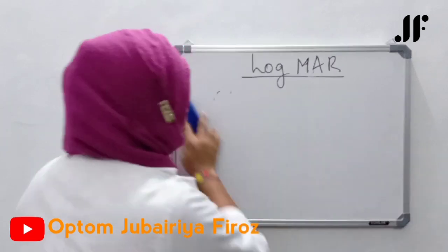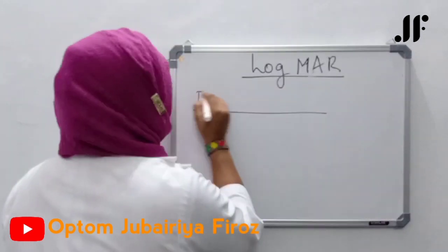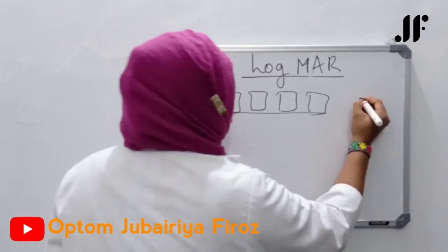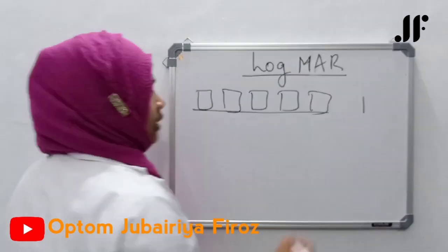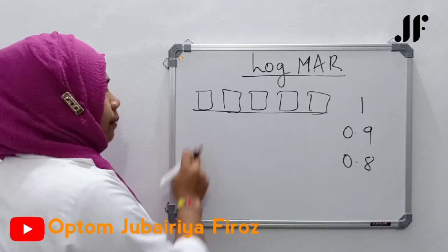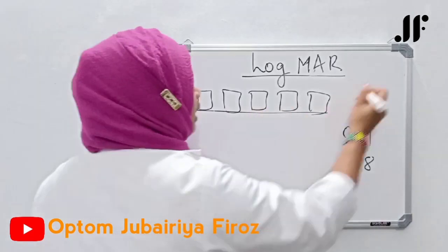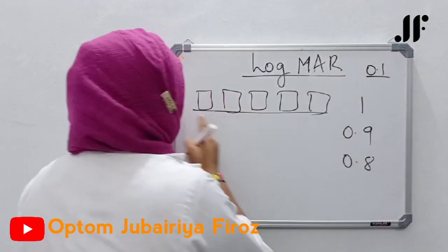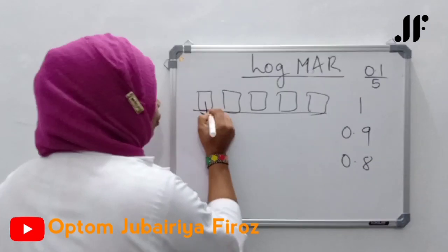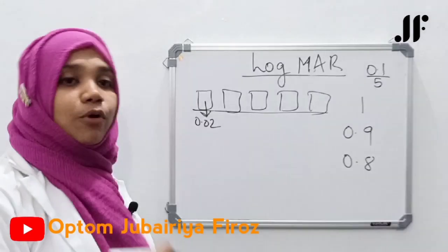Now coming to recording. Recording one line is 5 letters. Each line is - topmost line value 1, second line 0.9, third line 0.8. That means value of 1 line is 0.1. Value of 1 line is 0.1. One line has 5 letters, 0.1 divided by 5. One letter value, that is 0.02. One letter is 0.02.